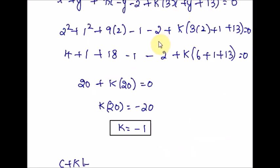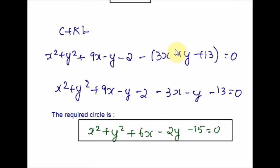In this method we are not using a system of equations — we are using the system of circles. Once you get the k value, plug it into C + kL and simplify the equation until you have only five terms: x², y², x, y, and a constant. That is the required equation of the circle. Hope you are clear with Methods 4 and 5. If you have any queries or topic requests, please let me know. See you in the next video — thanks for watching, bye!